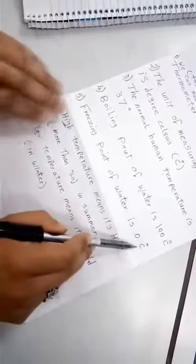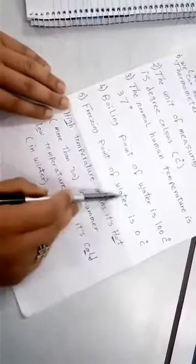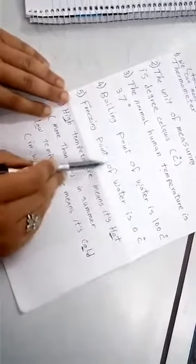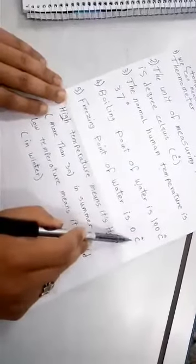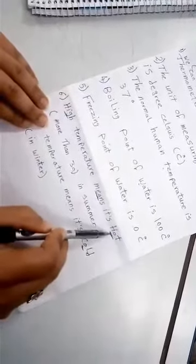Number 5: Freezing point of water is 0 degrees Celsius. Freezing point of water means the temperature at which water freezes, which is at 0 degrees Celsius.